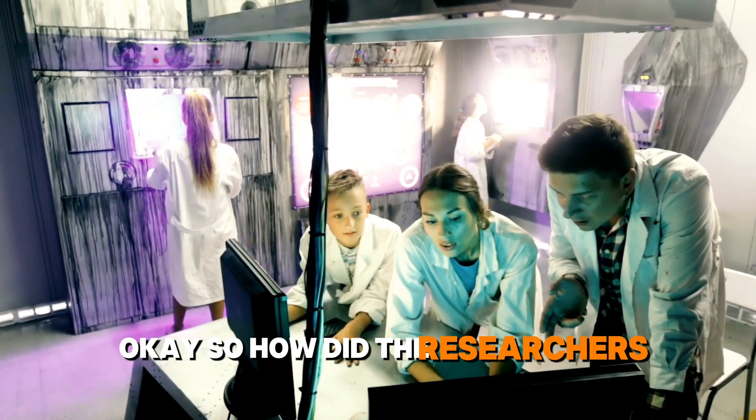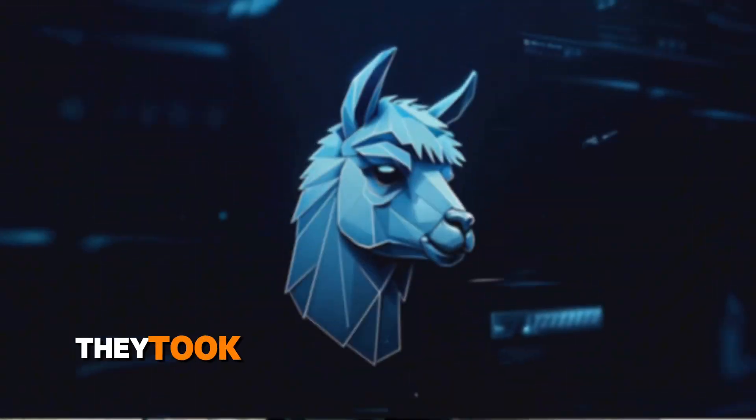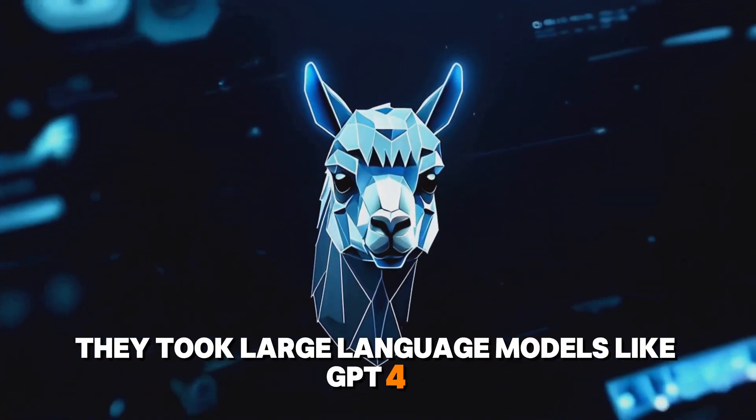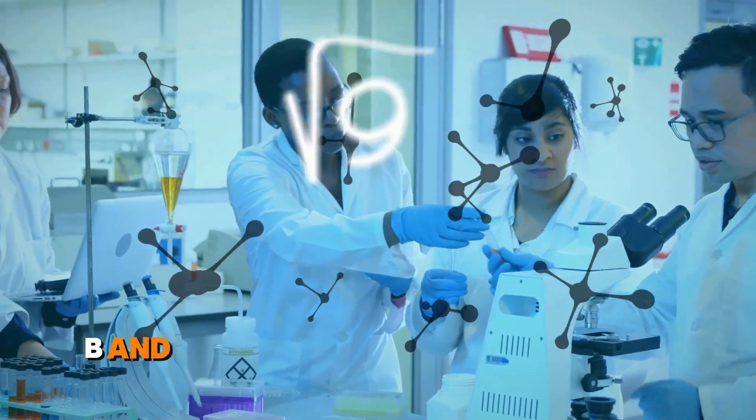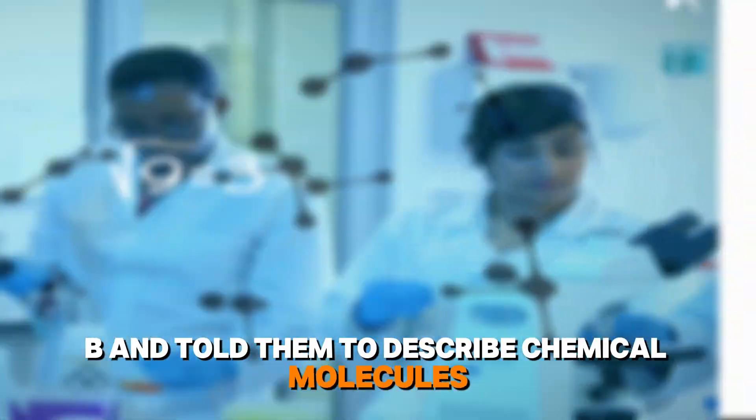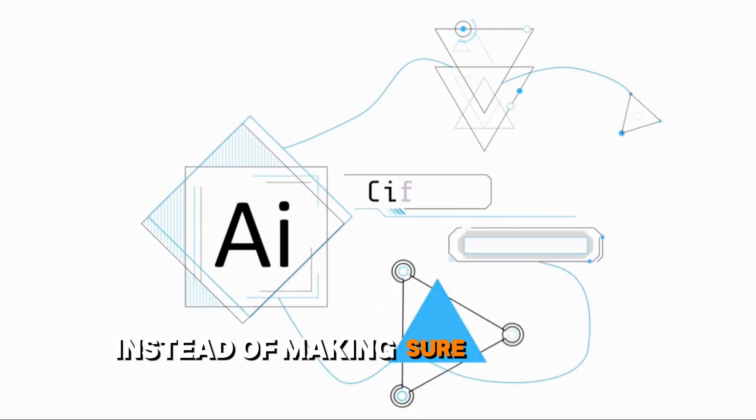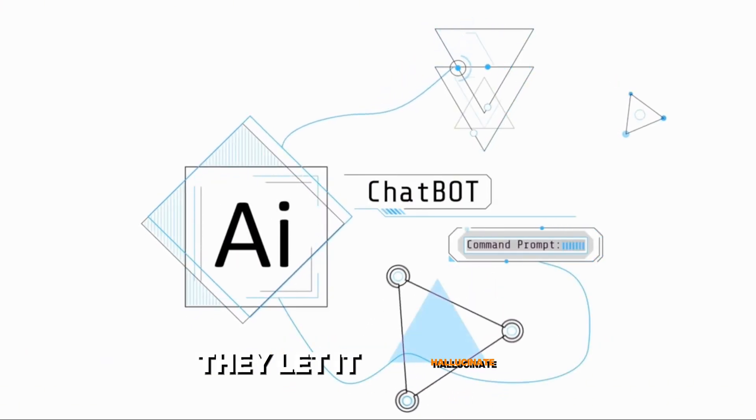Okay, so how did the researchers actually test this? They took large language models like GPT-40, Llama 3.1 8B and Mistral 8B and told them to describe chemical molecules. But here's the twist. Instead of making sure the AI was accurate, they let it hallucinate.